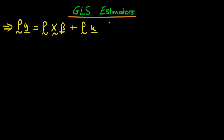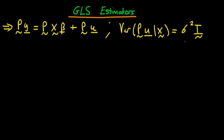The idea being that if we look at our transformed error — P times U — we require that the transformed error PU given X should be homoscedastic. In other words, it should be equal to sigma squared times the identity matrix I. In requiring that, we came up with an expression for the identity matrix in terms of P: I equals P times omega times the transpose of P. We're going to use this expression to derive the explicit form of the transformation matrix P.